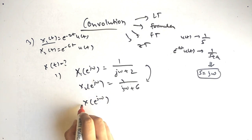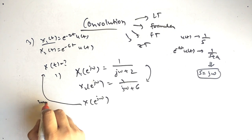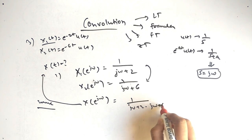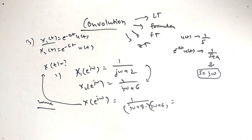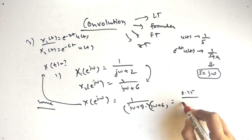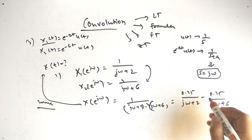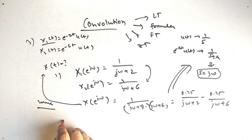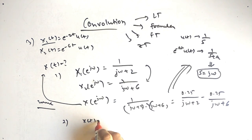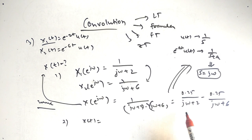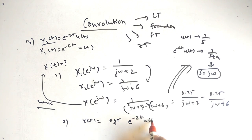Now we multiply both to get X of j omega. Multiplying gives 1 over j omega plus 2 times j omega plus 6. Taking the partial fraction we get 0.5 upon j omega plus 2 minus 0.25 upon j omega plus 6. Taking the inverse Fourier transform using the relation 1 by j omega plus a gives e raised to minus at times u of t, the answer is 0.5 times e raised to minus 2t times u of t minus 0.25 times e raised to minus 6t times u of t.